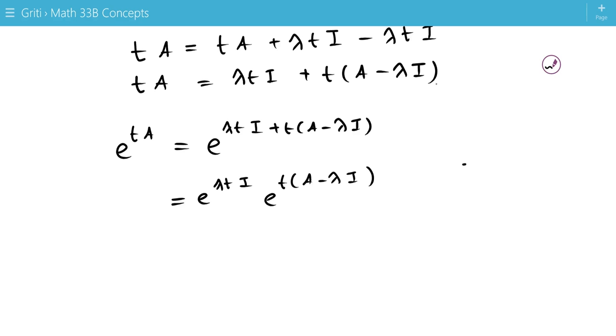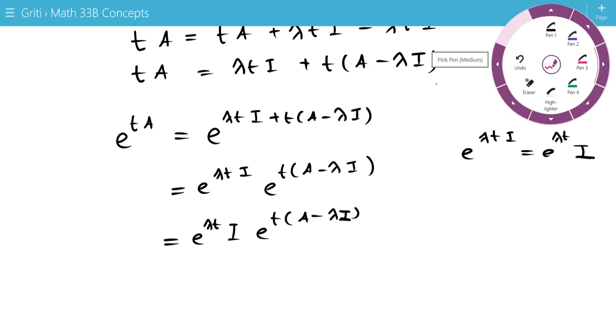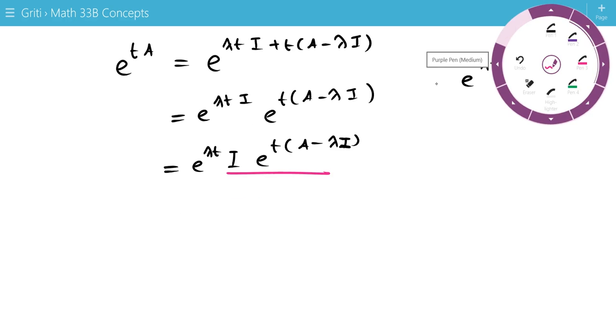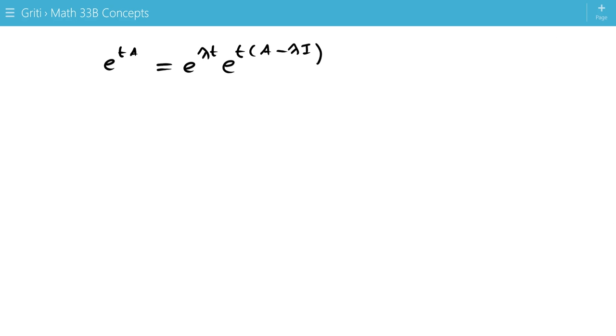And since e to the lambda t i is equal to e to the lambda t times i, because i is a diagonal matrix. So, we can write this as e to the lambda t times i times i times i, but i multiplied with any matrix just gives you that matrix again. So, this simplifies to e to the lambda t times e to the t times a minus lambda i. So this really helps. If you know eigenvalues, we can now write e to the ta as a product of e to the lambda t times this e to the t times a minus lambda i.